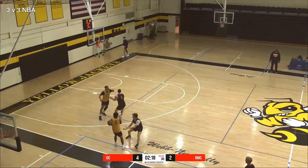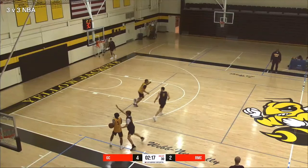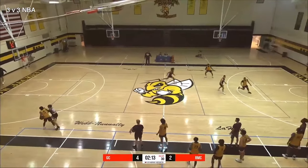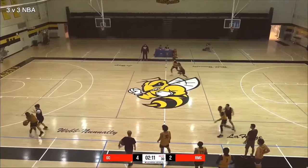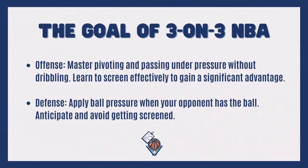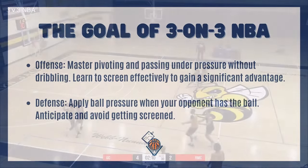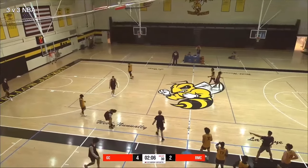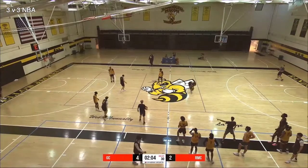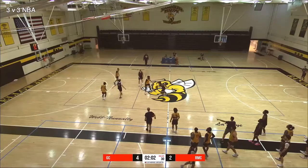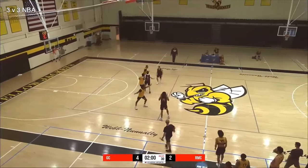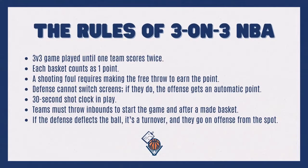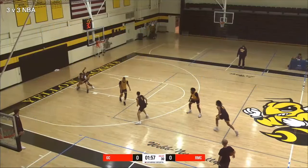The goals of three-on-three NBA are to work on pivoting under pressure, and defensively giving pressure on the ball and making things tough. The rule is that you cannot switch screens defensively — that's what really makes it tough. So you've got to be physical, you've got to fight through screens. You can have a little more denial or try to steal because the offense cannot dribble.